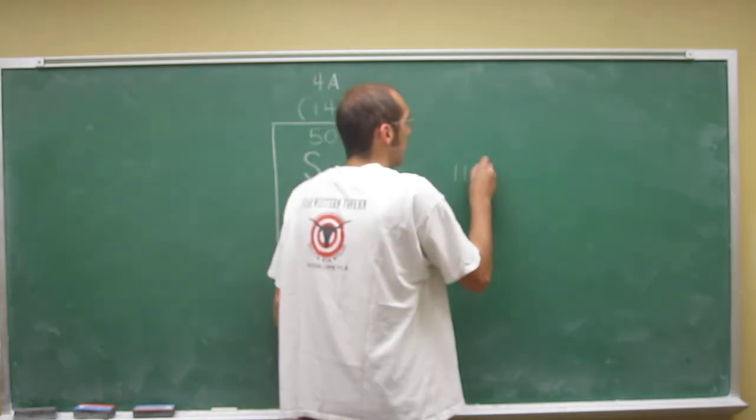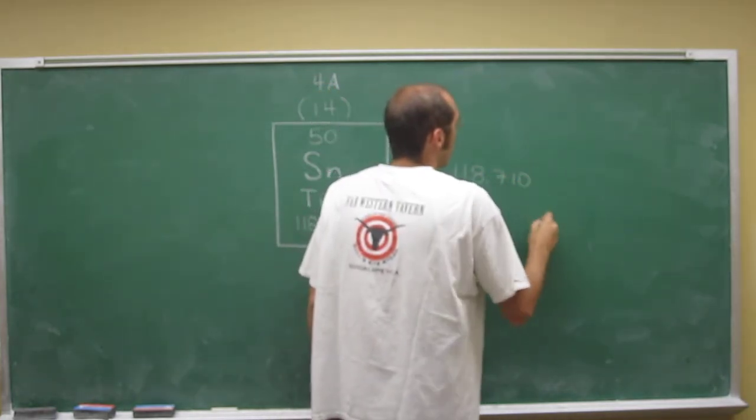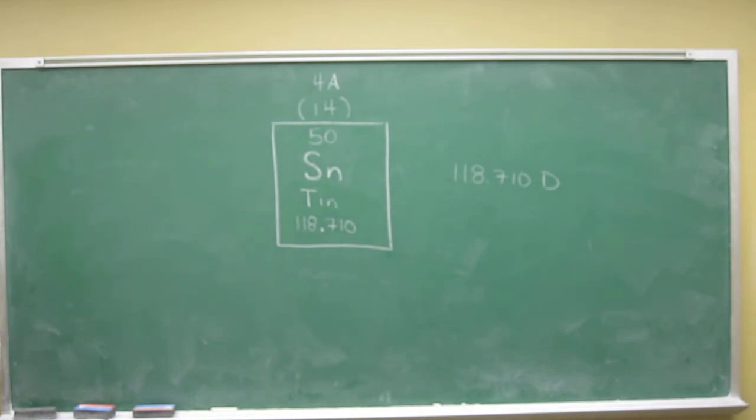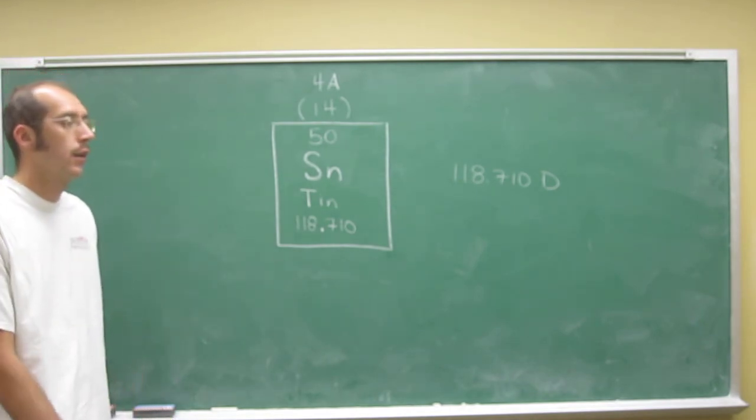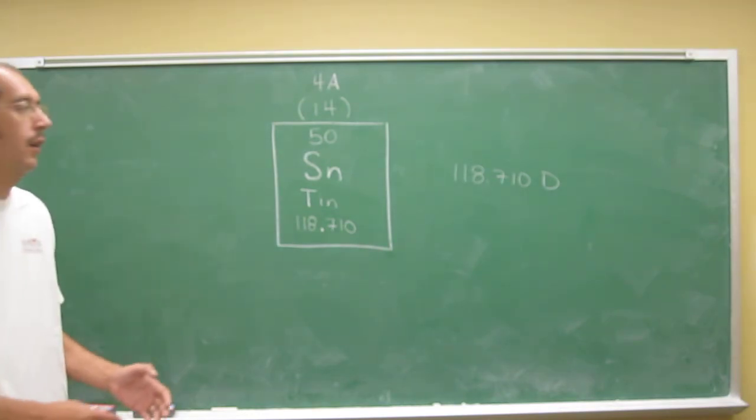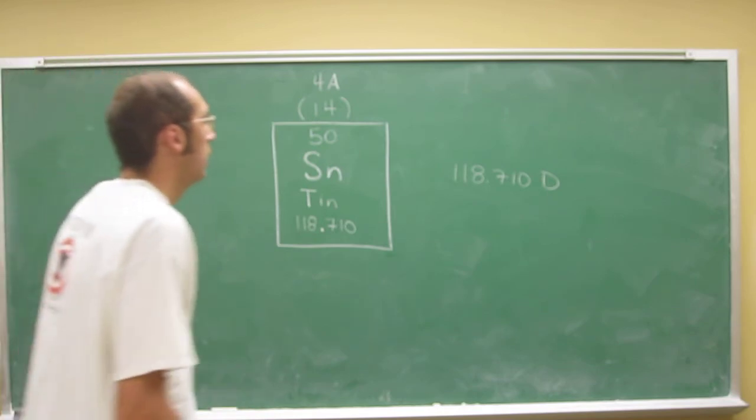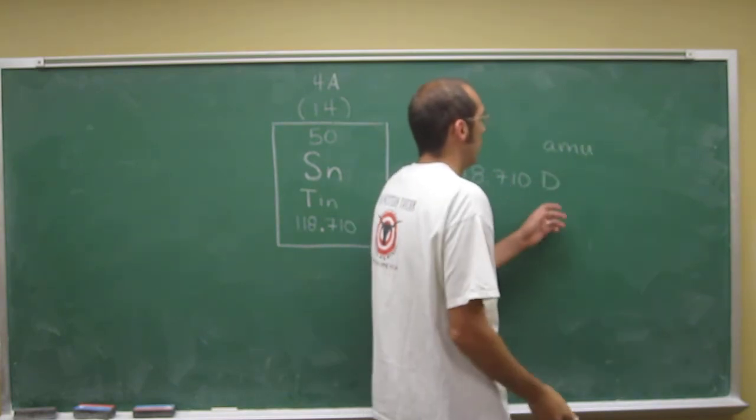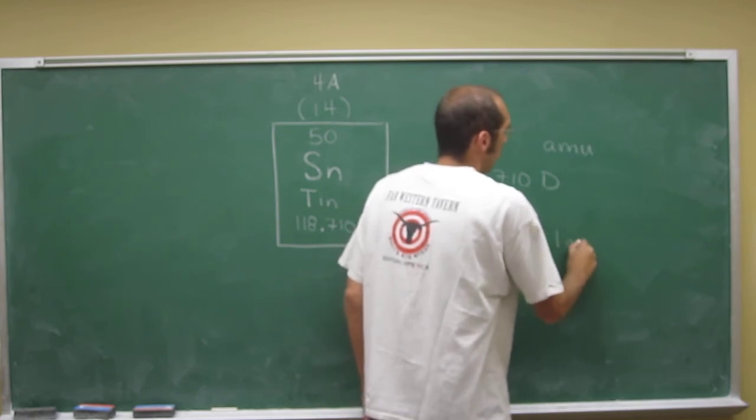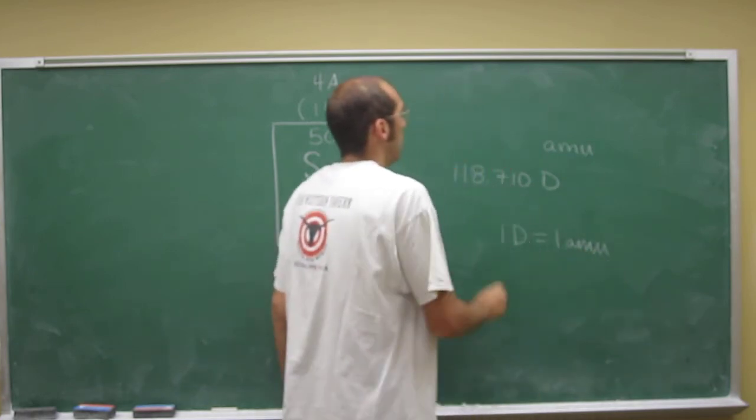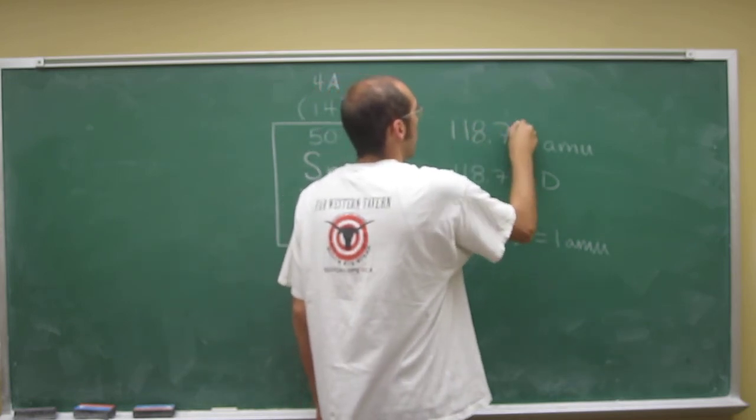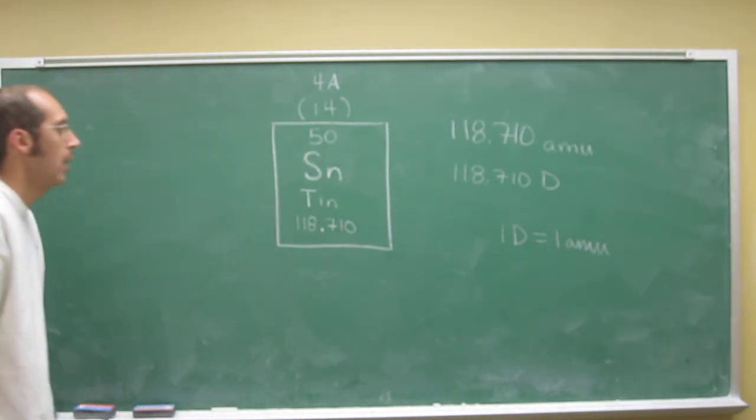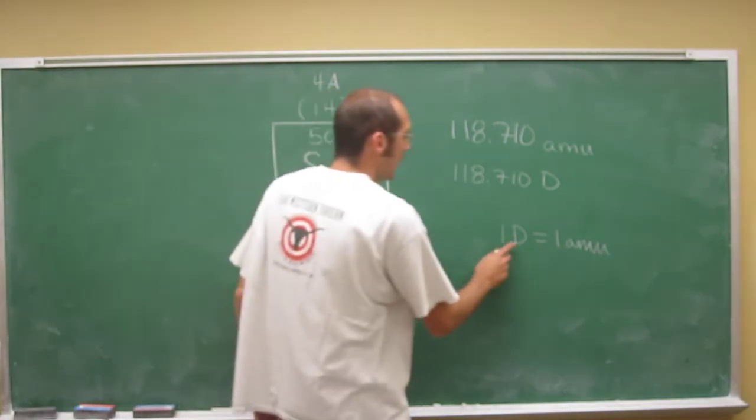There's a somewhat antiquated but well-used alternative to Dalton, and it's AMU, which means atomic mass unit. There's a conversion factor: 1 Dalton equals 1 AMU. So in this case, it would be 118.710 AMU. That's how much the average tin atom weighs.